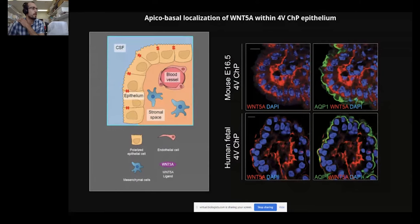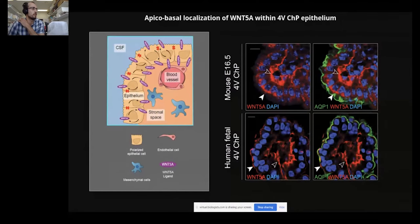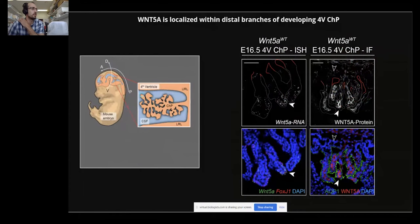Moreover, we also noticed an interesting distribution pattern of WNT5A within the choroid plexus epithelium, where WNT5A can be located in both apical and basolateral sides of the epithelium. This pattern is present in both mouse and human, pointing to an evolutionarily preserved function of WNT5A in tissue development. Moreover, we also noticed WNT5A expression being restricted mostly to the distal villi in the branched fourth ventricle choroid plexus as opposed to the more basal regions.